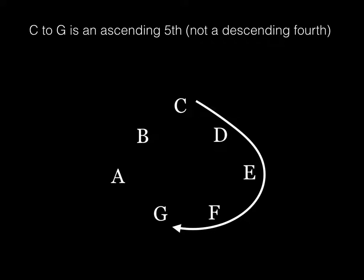C to G is an ascending fifth, not a descending fourth. Remember, we're just talking about fifths, not fourths. Even though C down to G would be a descending fourth, we talk about the root relationship, the root motion between C and G, as an ascending fifth.